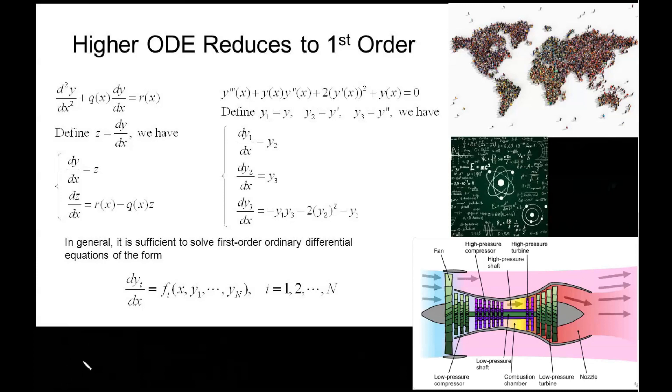These equations describe a lot of phenomenon that occur around us such as the falling of an apple from a tree, the Earth's orbit, the motion of a fluid, the transfer of heat, and many many others.